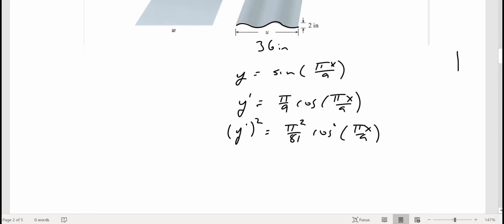Okay, so my arc length, 36, is equal to the integral of square root of 1 plus pi squared over 81 times cosine squared of pi x over 9, dx.